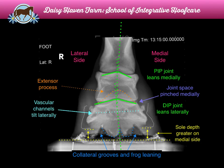I'm looking at the fact that my collateral grooves and my extensor process are also rolling to the lateral side, where my PIP joint is actually leaning or rolling medially. So this horse has a number of rotational aspects going on that I have to try to figure out.